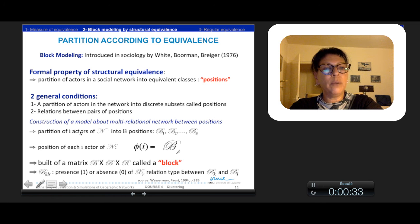So the notation is the following. We have a partition of n actors into B positions. The position of actor i is a function which attributes a block B_k. We build a matrix B by B by R called a block, which is composed of several blocks B_k,L,R, with the presence 1 or absence 0 of relation type R between B_k and B_L.